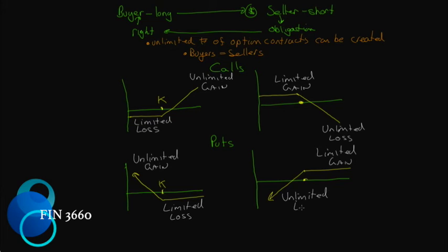Notice the symmetry between these charts. On the call side, the call seller is simply the reverse of the call buyer. On the put side, the put seller is simply the reverse of the put buyer. They are symmetrical. In other words, for the call buyer to make a dollar, the call seller must lose a dollar. That's what symmetry is.